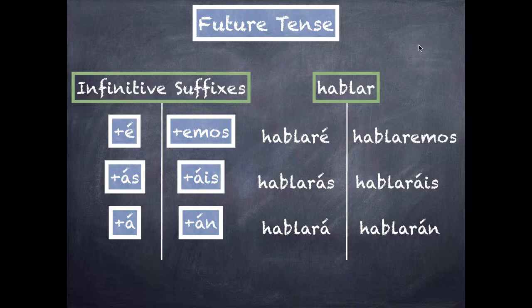So that's the future tense conjugations. And it doesn't matter whether it's an AR or an ER or an IR verb, we always just use the infinitive and then add the suffixes.